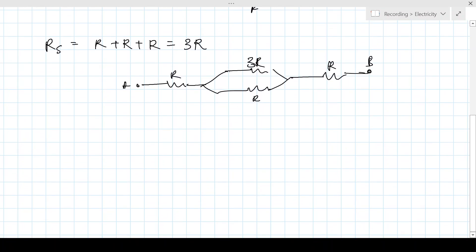So, now let's find the equivalent resistance between these parallel ones. So, 1 by R parallel is equal to 1 by 3R plus 1 by R, that is equal to 1 by 3R plus 3 by 3R, that is 4 by 3R. So, R parallel is equal to 3R by 4.